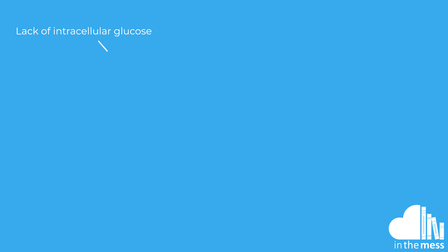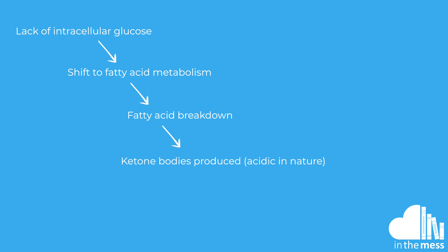Intracellularly, the cells don't have glucose to undergo aerobic respiration so they switch to fatty acid metabolism. When the fatty acids are broken down, they produce ketone bodies. When these get into the bloodstream, they are acidic and that contributes to the metabolic acidosis.